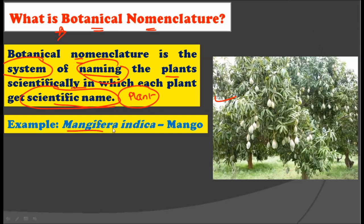Here we have an example of Mangifera indica, that is the mango. This name Mangifera indica is abided by the international code of botanical nomenclature. So botanical nomenclature has the very important function of naming the plants in a very scientific way.